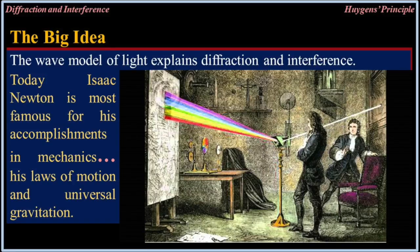The big idea: the wave model of light explains diffraction and interference.